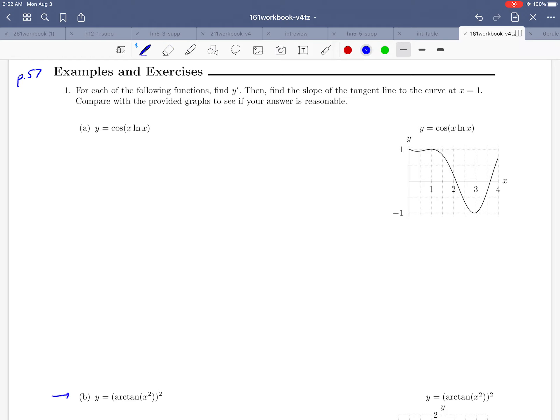Before we scroll down, let's read the directions. They'd like us to find the derivative y prime and then to find the slope of the tangent line to the curve at x equals 1, and then we'll compare to our graph to see if that's reasonable.